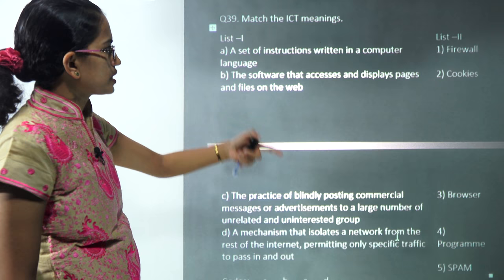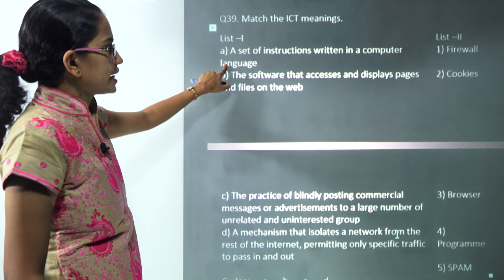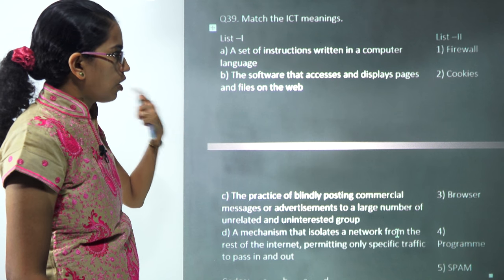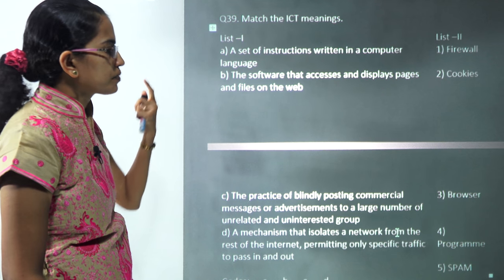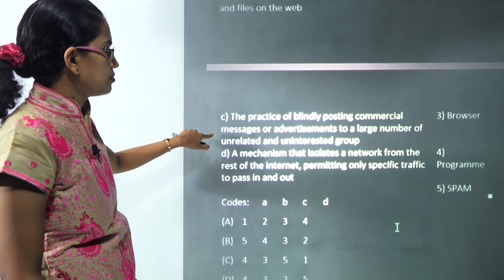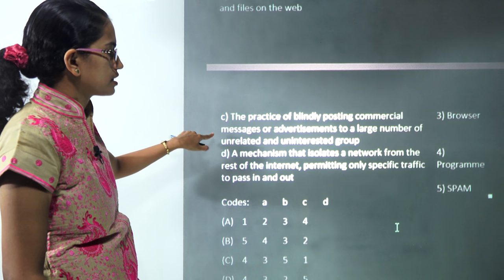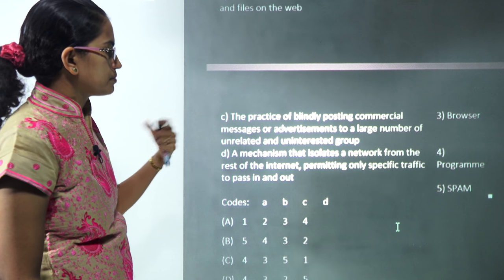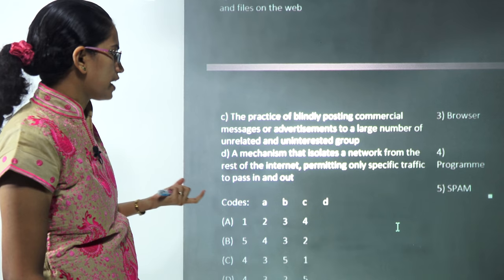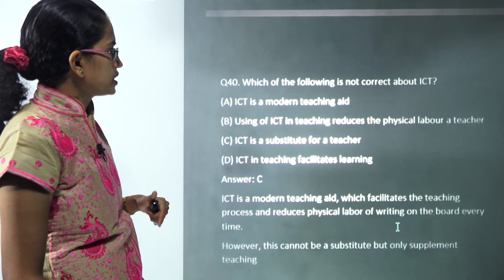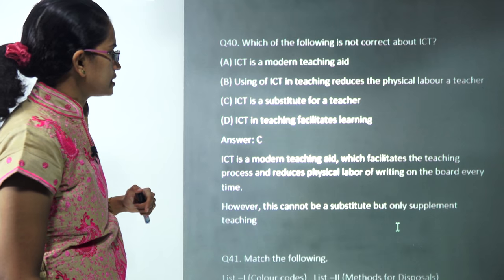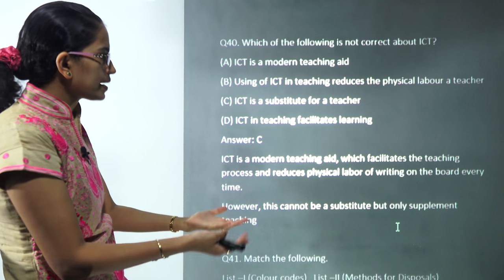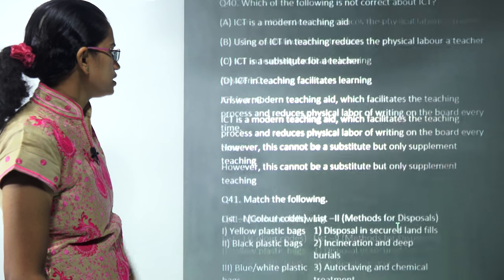You have to match list one with list two. Set of instructions written in a computer language is a program. The software that accesses or displays pages on the web is a browser. The practice of blindly posting commercial messages to large unrelated groups would be spam. The message that isolates a network from the rest of the internet and permits specific traffic to pass through is known as firewall. The next question: which is not correct about ICT? ICT is a substitute for teacher, that's totally incorrect. It can supplement the teacher but it cannot substitute the teacher, so C is incorrect.